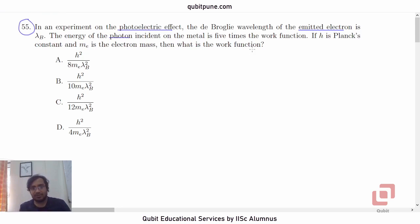So let us assume that the work function is φ. That is a standard symbol for work function. Now what are they saying? Energy of the photon incident on the metal is five times the work function. So energy E of the photon will be 5φ. Now, out of this energy, what fraction will be utilized for the electron to come out of the metal? That is equal to the work function.